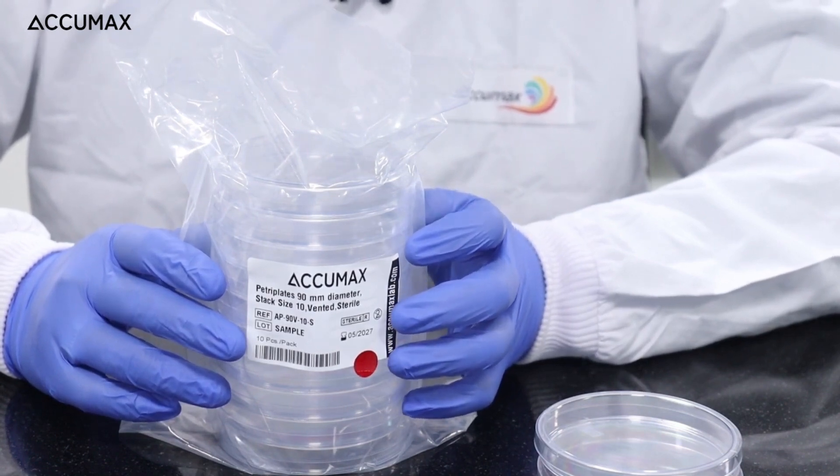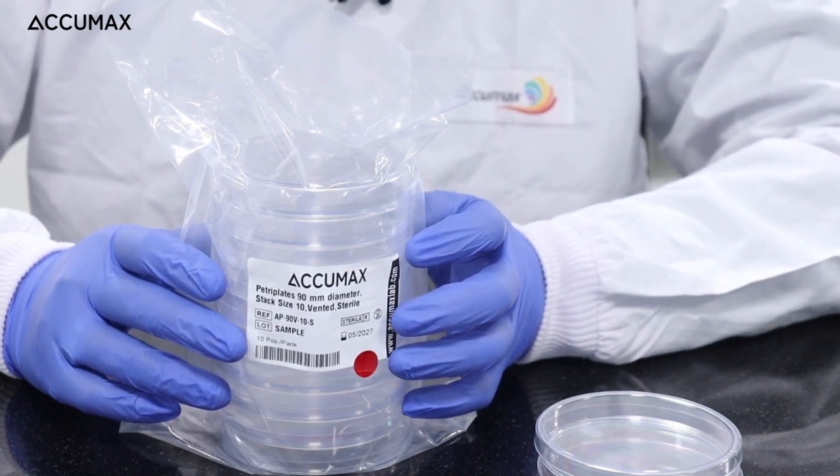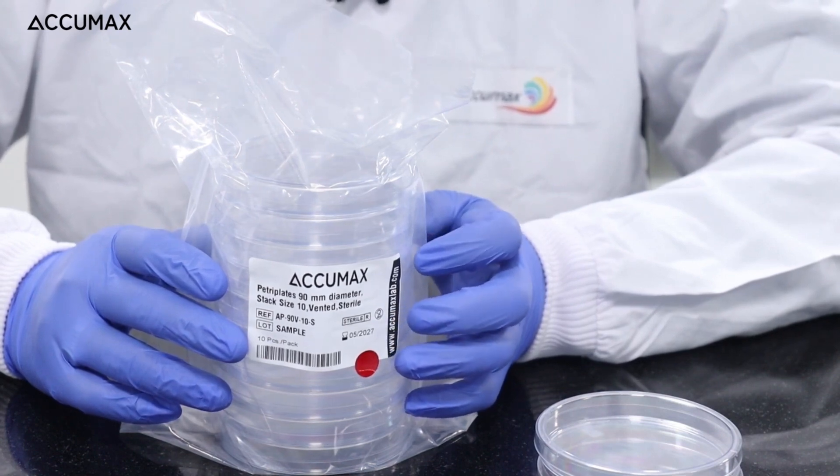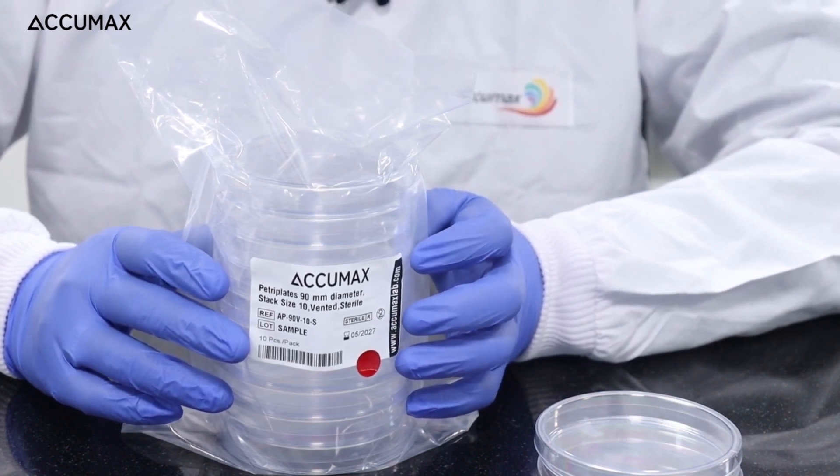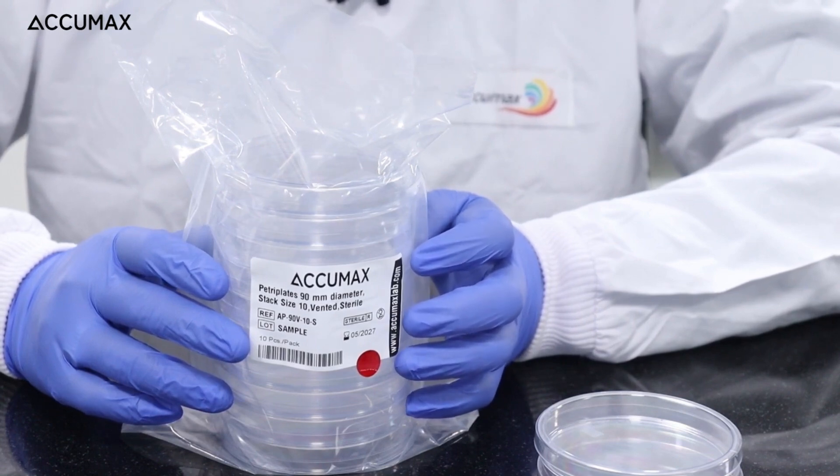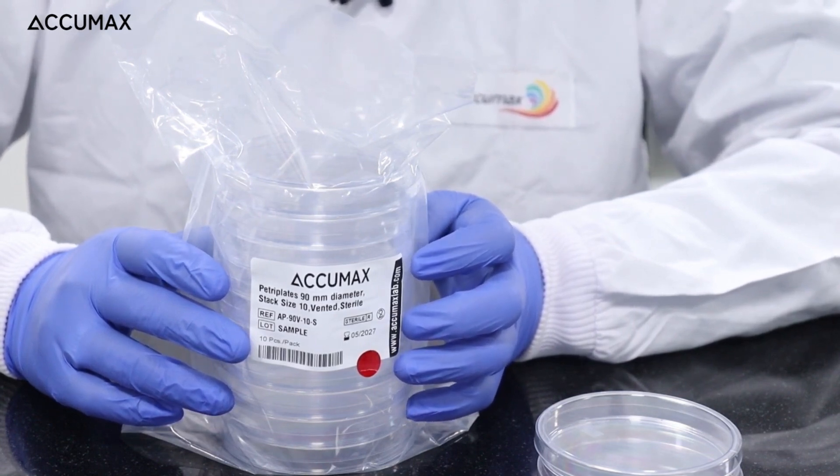While the sterility assurance level of aseptic Accumax petri plates is 10 to the minus 3, that indicates there's a chance of one organism out of 1000 surviving the sterilization process.